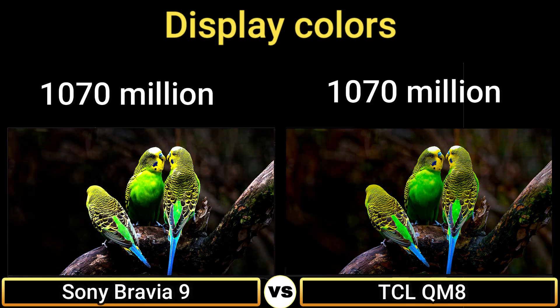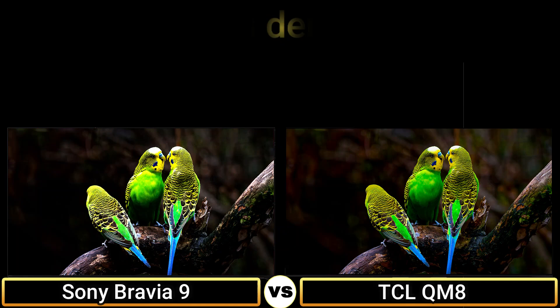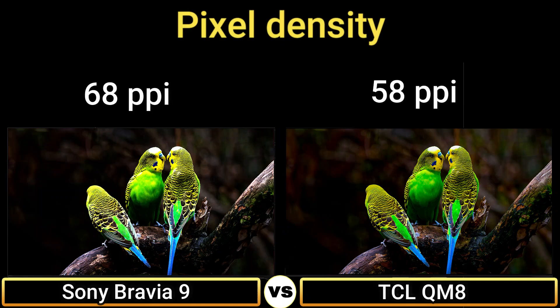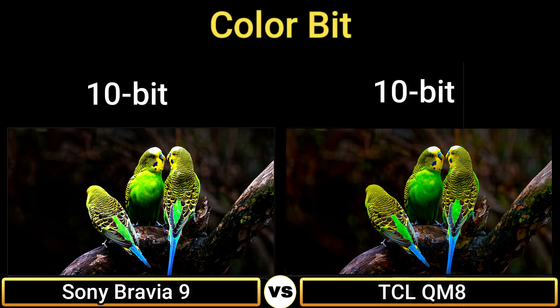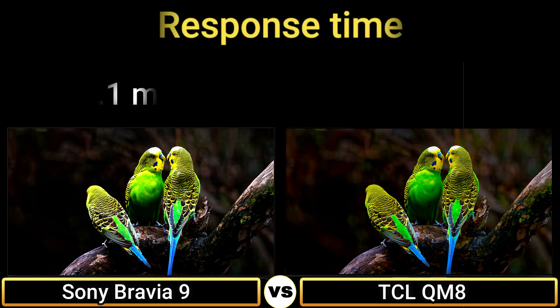Display colors: 1.07 billion. Pixel density: 68 ppi and 58 ppi. Color bit: 10-bit. Response time: 0.1ms and 5ms.